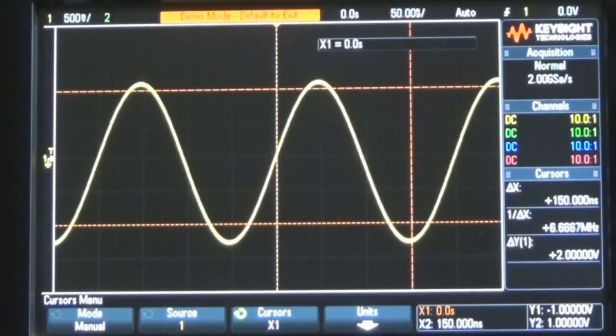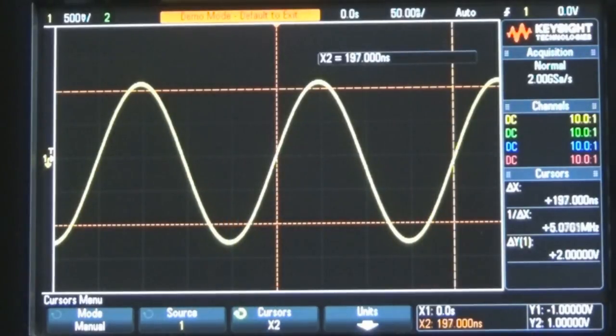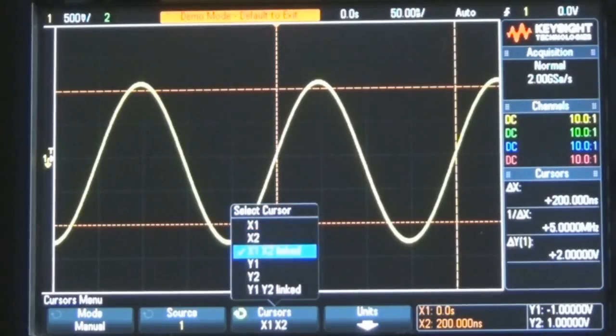Gire la perilla hasta que el puntero X2, que es el marcador de tiempo número 2, se cruce con el siguiente borde ascendente de la onda sinusoidal al mismo nivel de voltaje. Realizaremos el mismo procedimiento con los cursores verticales Y1 y Y2.